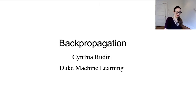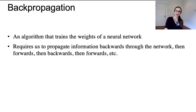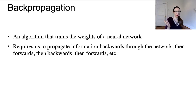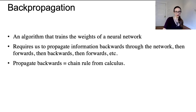Let's talk about backpropagation. Backprop is an algorithm that trains the weights of a neural network. It requires us to propagate information backward through the network and then forward through the network, then backward and forward, and you keep going until it's converged. Propagating backward is actually using the chain rule from calculus. Propagating forward is simply evaluating the network.